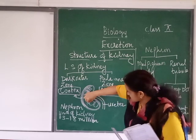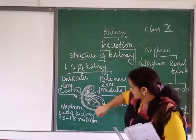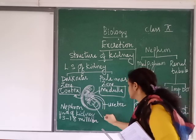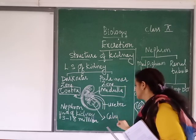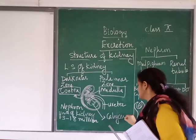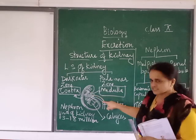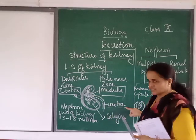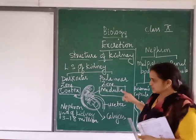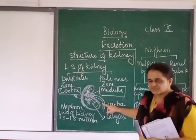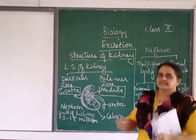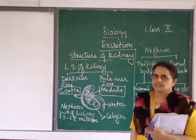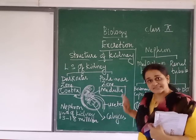There are some flower-like structures here called calyces — C-A-L-Y-C-E-S. And the tube-like structure which comes out is the ureter, which you already know. A pair of kidneys connects to a pair of ureters, then the urinary bladder and urethra. This is our human excretory system.